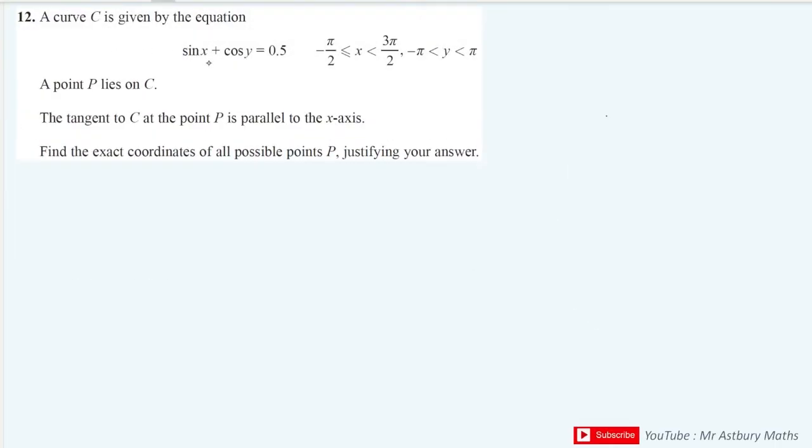A curve is given by the equation sin x plus cos y equals 0.5. We've got a given domain for x and y. The point P lies on C. The tangent to C at the point P is parallel to the x-axis. So if the tangent is parallel to the x-axis, it means the gradient is 0. So dy by dx is equal to 0. Find the coordinates of all the possible points P, justifying your answer.